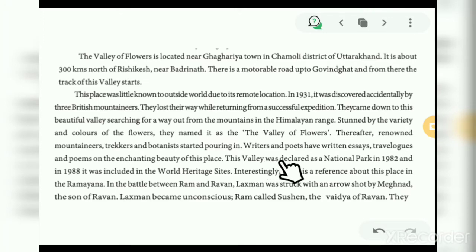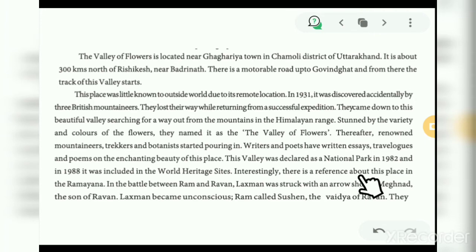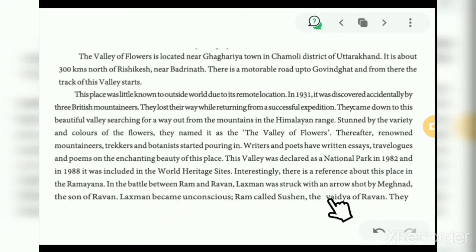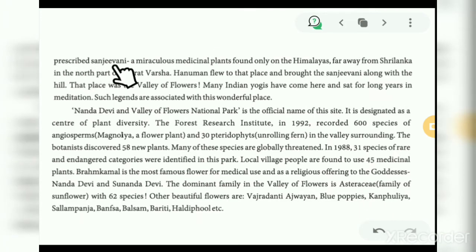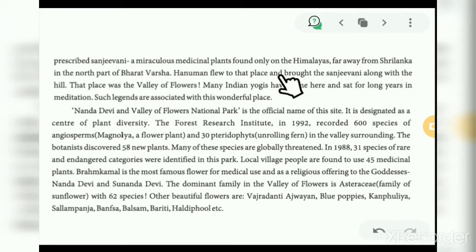This valley was declared a national park in 1982, and in 1988 it was included in the World Heritage Sites. Interestingly, there is a reference to this place in the Ramayana. In the battle between Ram and Ravan, Lakshman was struck with an arrow shot by Meghnath, son of Ravan. Lakshman became unconscious. Ram called Sushen, the Vaidya of Ravan. They prescribed Sanjivani, a miraculous medicinal plant found only in the Himalayas. Hanuman flew to that place and brought the Sanjivani along with the hill, and that place was the Valley of Flowers.